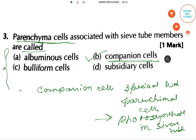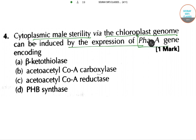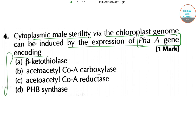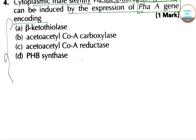The next question is about cytoplasmic male sterility — via the chloroplast genome, it can be induced by the expression of the phaA gene. The question asks what protein this phaA gene is encoding.